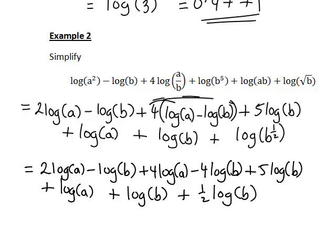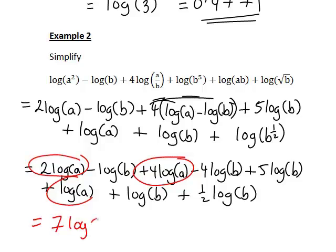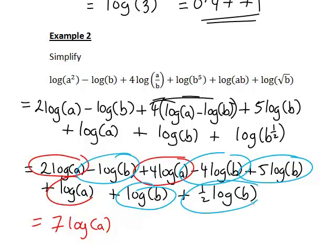So now we're pretty much ready to simplify this, because we have a lot of terms involving log a and a lot of terms involving log b. So let's look at the log a terms, we've got 2 log a there, another 4 log a there, another 1 log a there. So altogether, that is giving us 7 lots of log a. Everything else is in terms of log b, we have minus log b, minus another 4 log b, plus 5 log b, so those just cancel to 0, but then we also have another log b and another half log b, giving us 1 and a half log b, or 3 on 2 times log b.